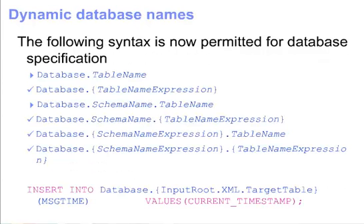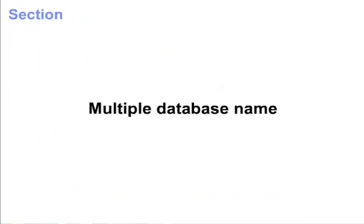Here is a summary of the syntax that is now permitted in v6. Note that the keyword database indicates a query from an external database, rather than a message tree query. If the data source name is not specified, it defaults to the data source name defined at the node level.